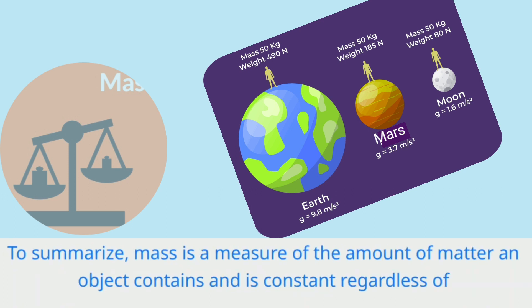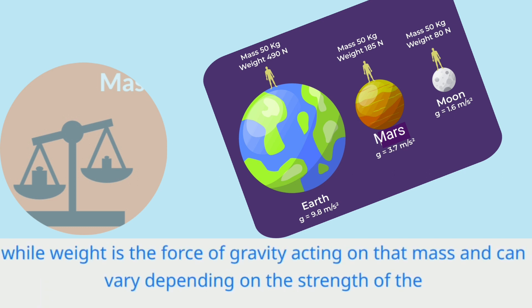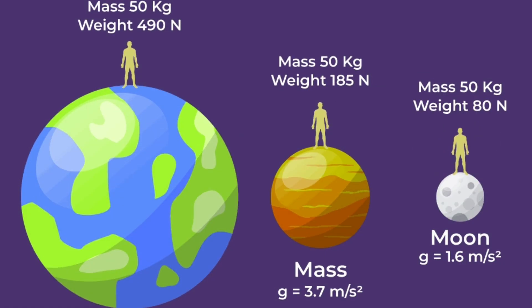To summarize, mass is a measure of the amount of matter an object contains and is constant regardless of location, while weight is the force of gravity acting on that mass and can vary depending on the strength of the gravitational field. It's important to distinguish between these two concepts, as they have different units and implications in various physical contexts.